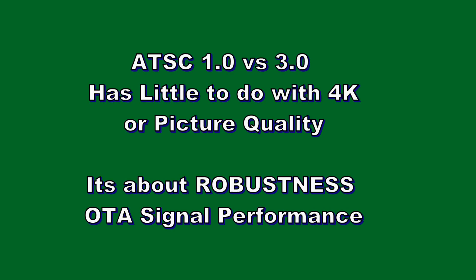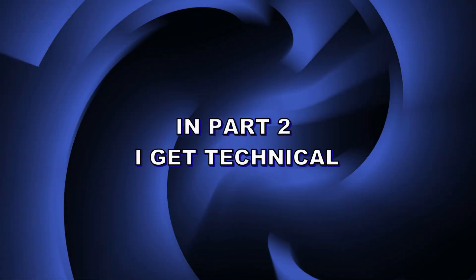Strangely enough, 3.0's advantages have very little to do with actual picture quality. ATSC 1.0, with its data rate, is fully capable of high-definition TV up to the 4K level. Really, we're talking about the waveform's robustness — its over-the-air signal performance — as the major gain with ATSC 3.0. I'll go all the way back to analog TV in my discussion: we'll start with analog TV, then the European standard DVB-T, then ATSC 1.0, and finally ATSC 3.0. This is all about digital TV and why the waveforms make the difference.